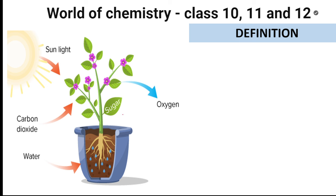Beautiful green plant with flowers. You're also observing sunlight. You're observing carbon dioxide. You're observing water. You're also observing it giving out oxygen. Simple. What is the photosynthesis definition? But first of all, photosynthesis is a process, students. Process means a method rather. Photosynthesis is a process — what is happening in this process?